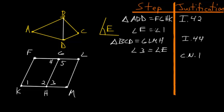Angle 3 equals angle E. Due to Common Notion 1, since angle 1 equals angle E and angle E equals angle 3, angle 1 and angle 3 are equal to each other. From here, we need to prove that KH and HM are in a straight line, and similarly that FG and GL are in a straight line.